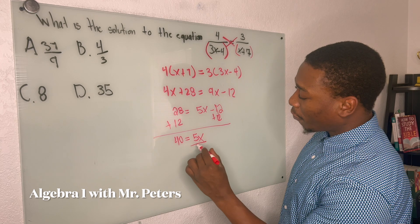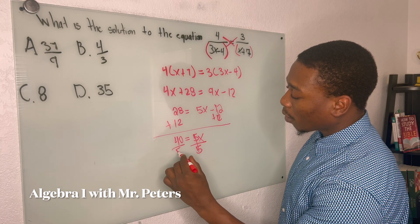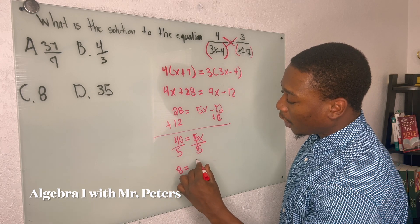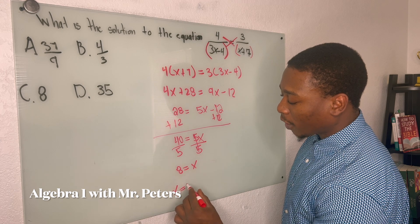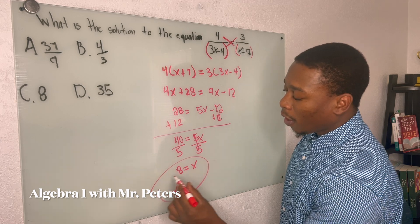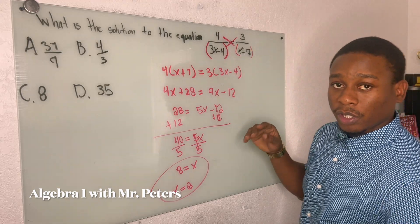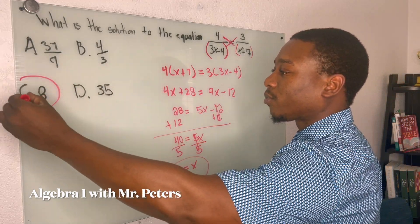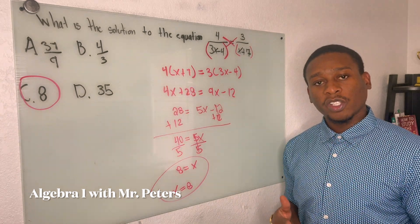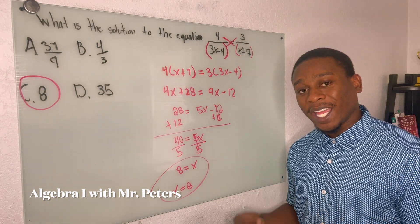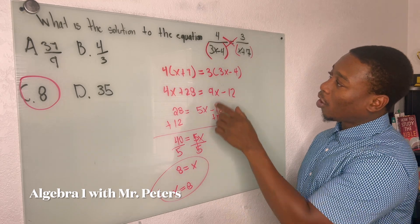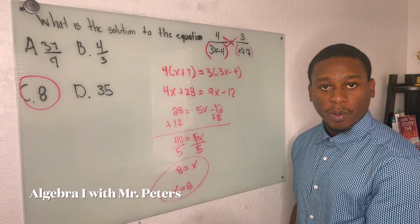Now, once we solve and we divide by 5, we're going to get 8 is equal to x. Or if you'd like to write it the other way, x is equal to 8. So just remember with the proportion, draw your x, cross multiply and distribute if needed. That is the hardest part of this lesson. Just remember to distribute.